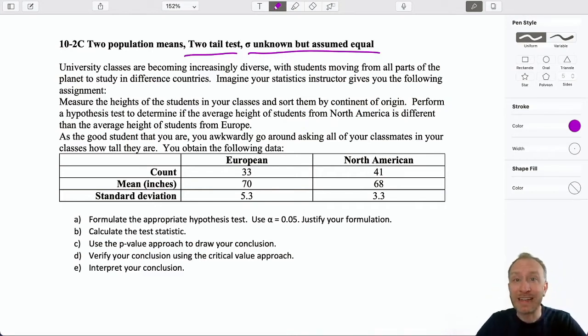So university classes are becoming increasingly diverse with students moving from all parts of the planet to study in different countries. Imagine your statistics instructor gives you the following assignment: Measure the heights of the students in your classes and sort them by continent of origin. Perform a test to determine if the average height of students from North America is different than the average height of students from Europe.